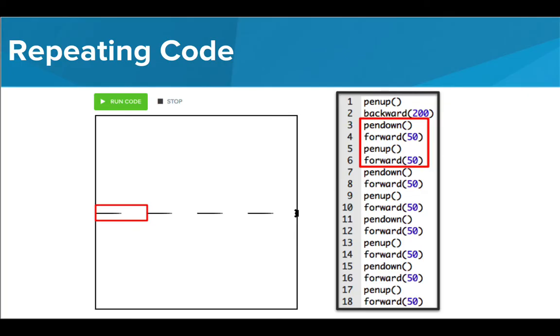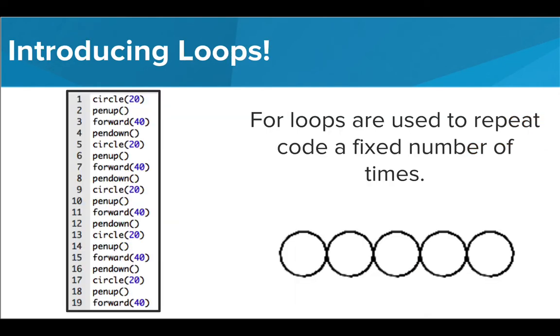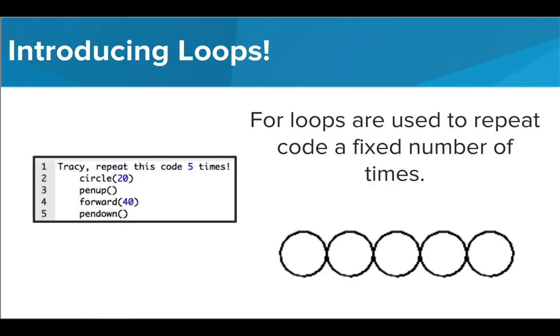What if we had a way to just tell Tracy to repeat this section of code? Well, we do! For loops are used to repeat code a fixed number of times. So instead of copying and pasting code to create your caterpillar with five circles, you can just tell Tracy, repeat the code to make a circle five times.